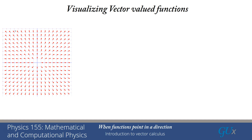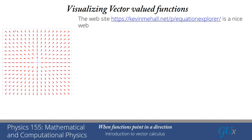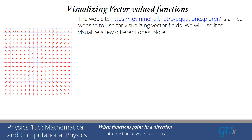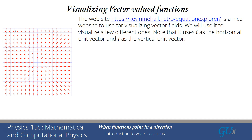We're going to try to visualize some different vector-valued functions. The website shown here — and I encourage you to explore it on your own — is a nice tool for visualizing different vector fields. Note that it uses i as the horizontal unit vector and j as the vertical unit vector. In class, we'll typically be using e_x and e_y for those unit vectors, but for now we'll use i and j just like what is used on the website.